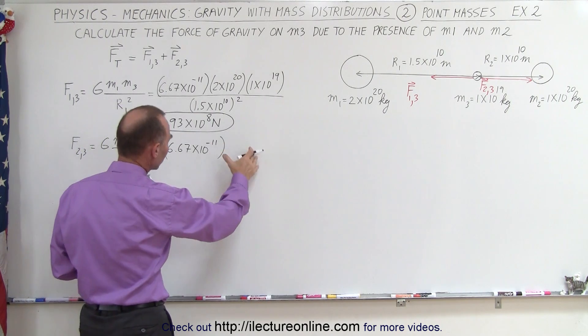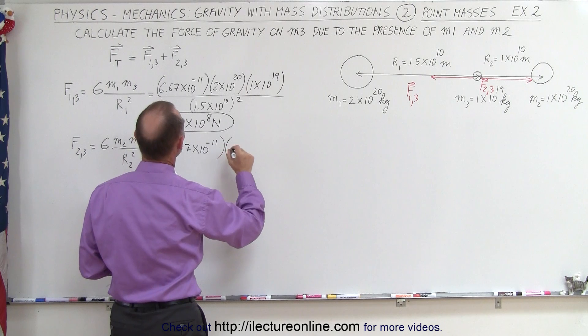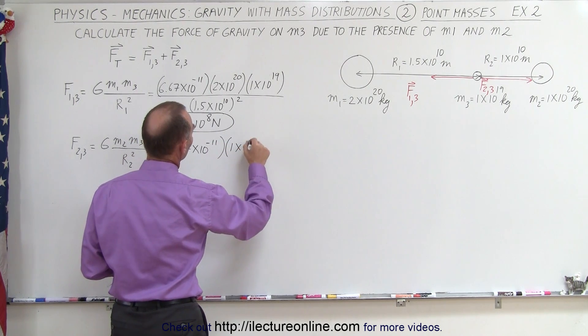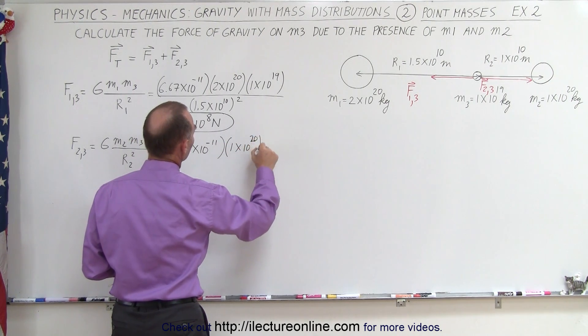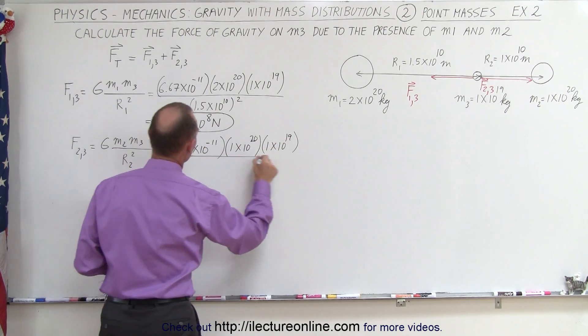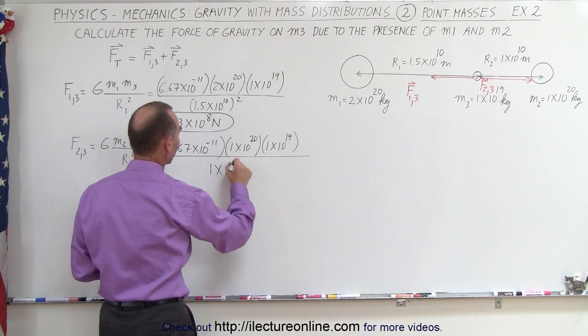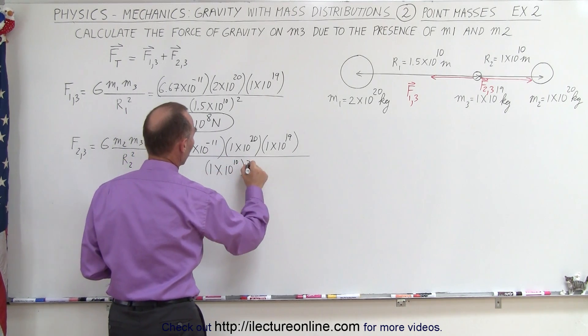So we get 6.67 times 10 to the minus 11. Of course, that would be Newtons meters squared per kilogram squared, but we're going to leave the units out. m2 is 1 times 10 to the 20th, m3 is 1 times 10 to the 19th, and the whole thing divided by 1 times 10 to the 10th quantity squared.